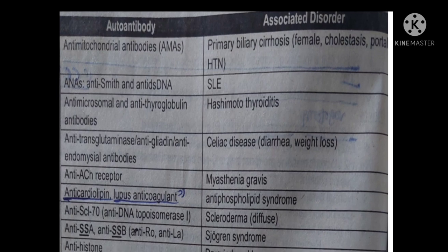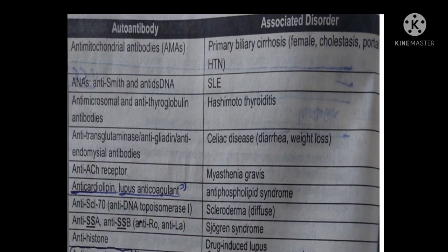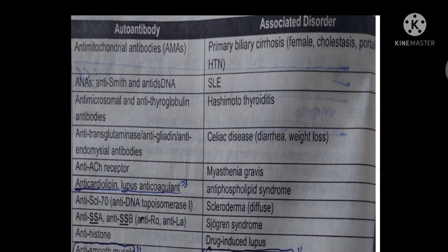Antimitochondrial antibodies (AMA) are diagnostic for primary biliary cirrhosis (PBC). Primary biliary cirrhosis is common in females. Features include cholestasis, pruritus, and portal hypertension.